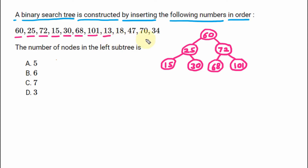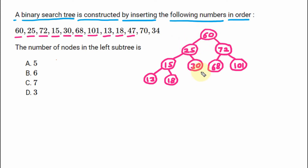Next value is 13. 13 is less than 60, less than 25, and less than 15, so on the left side of 15 we have 13. Next value is 18. 18 is less than 60, less than 25, but greater than 15, so on the right branch of 15 we have 18. Next value is 47. 47 is less than 60 but greater than 25 and greater than 30, so 47 comes on the right hand side of 30. Next value is 70. 70 is greater than 60 but less than 72 and greater than 68, so on the right branch of 68 we have 70.